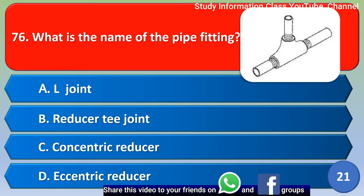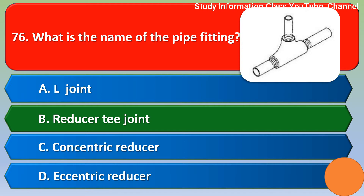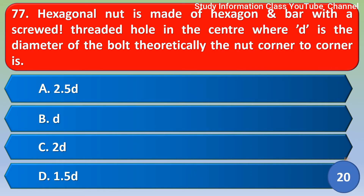Next question: What is the name of this pipe fitting? Option A: L-joint, Option B: reducer T-joint, Option C: concentric reducer, Option D: eccentric reducer. The correct answer is Option D, eccentric reducer.